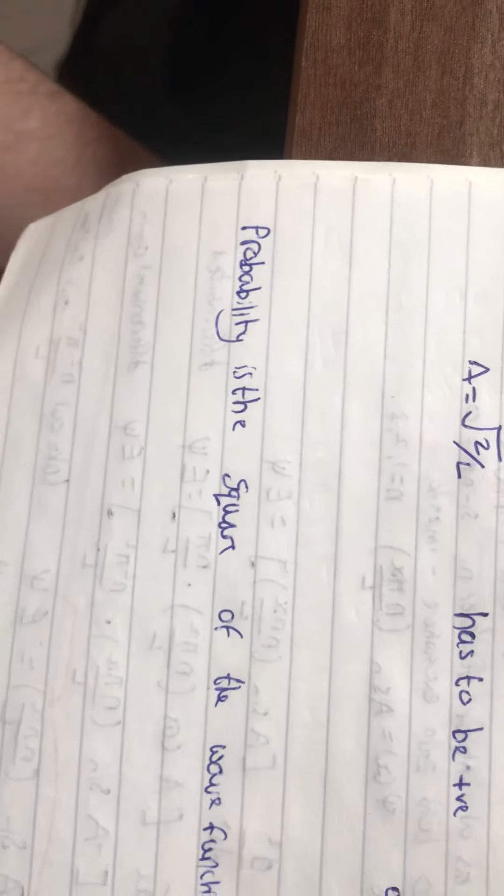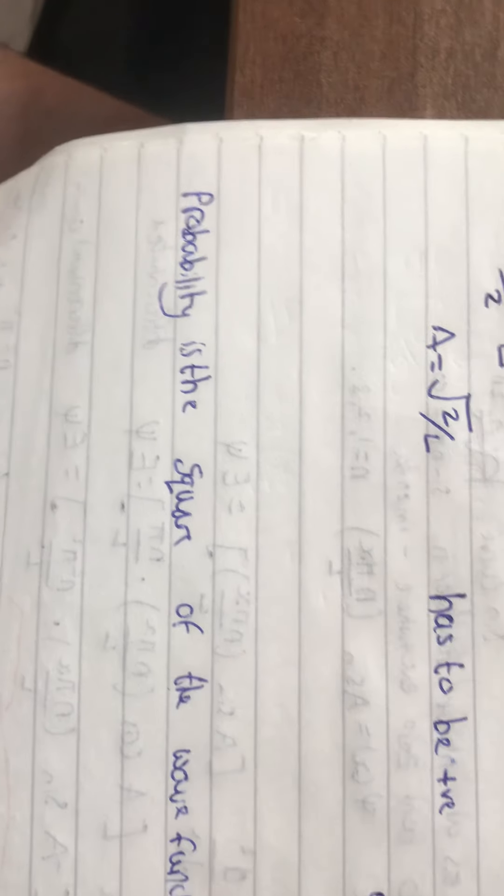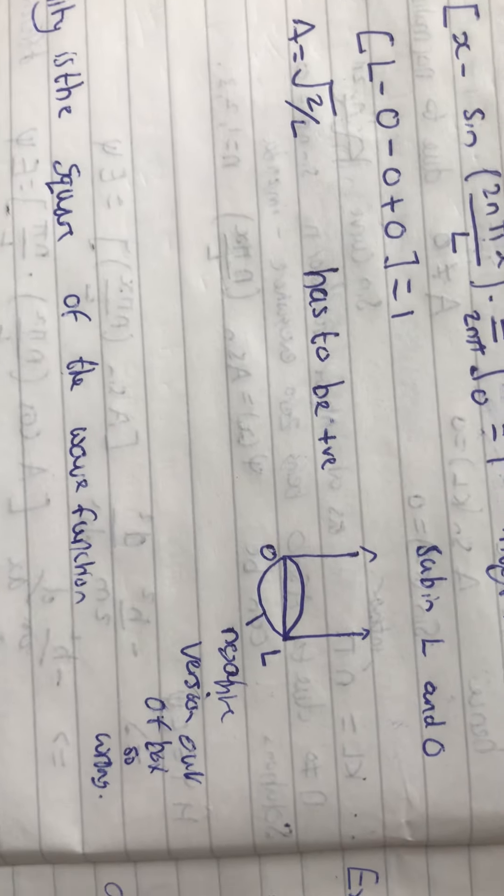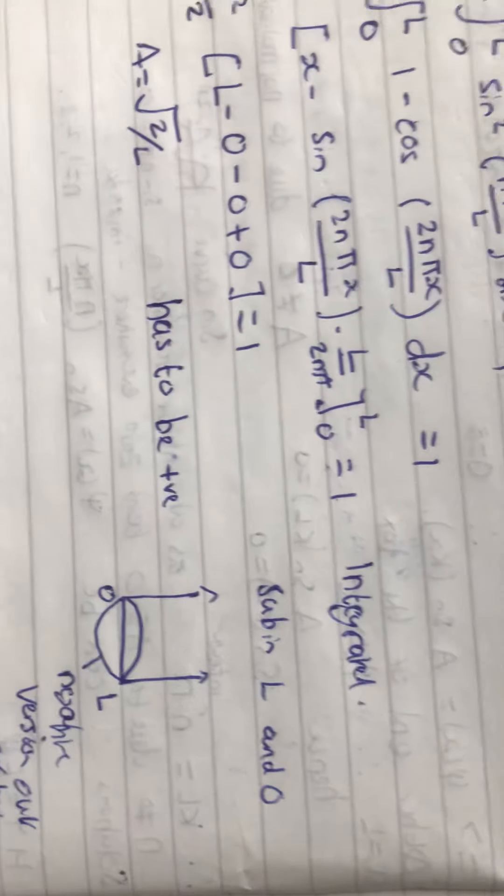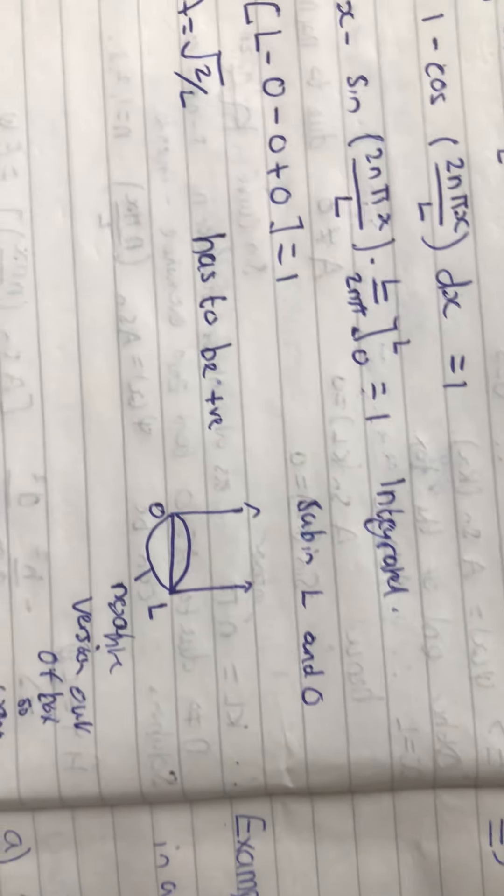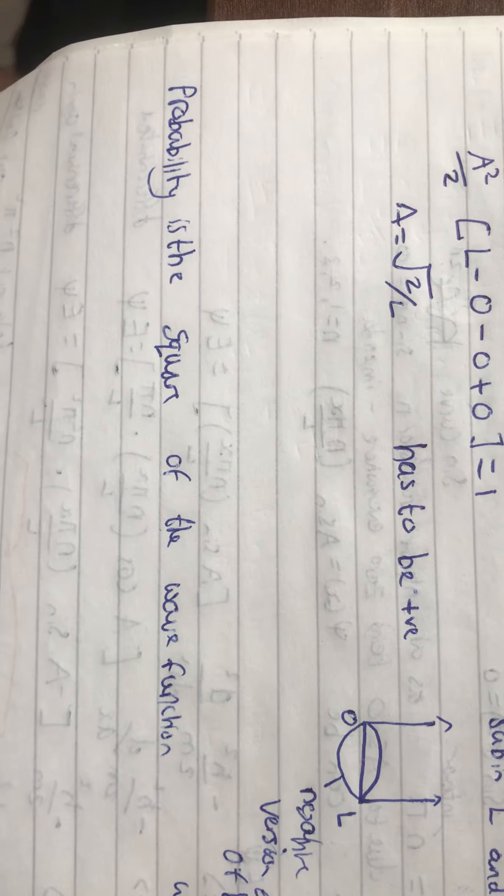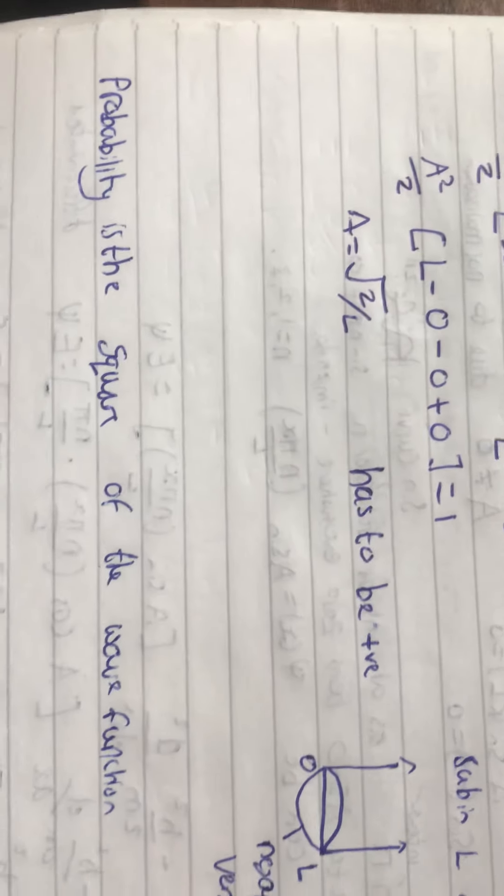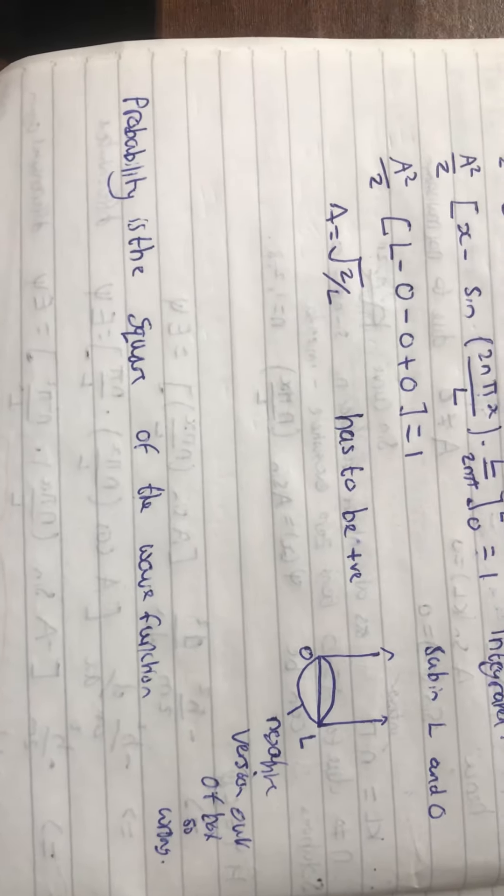The probability is the square of the wave function. Yeah, so the probability is the square of the wave function, essentially. Which is what we worked out, almost. So, yeah, that's pretty much everything for this lecture. We've got some more examples coming up, but this video's been going on long enough, so I'm going to save it for the next one.